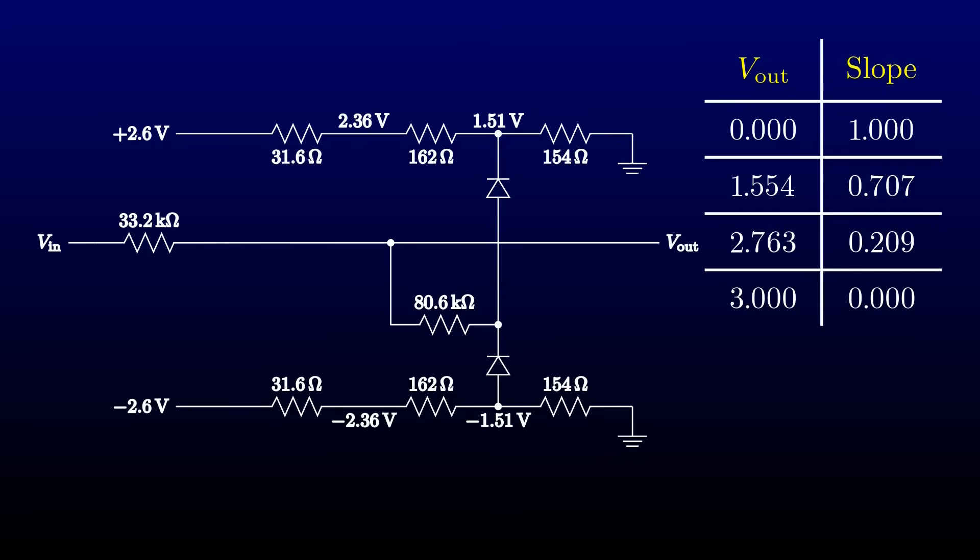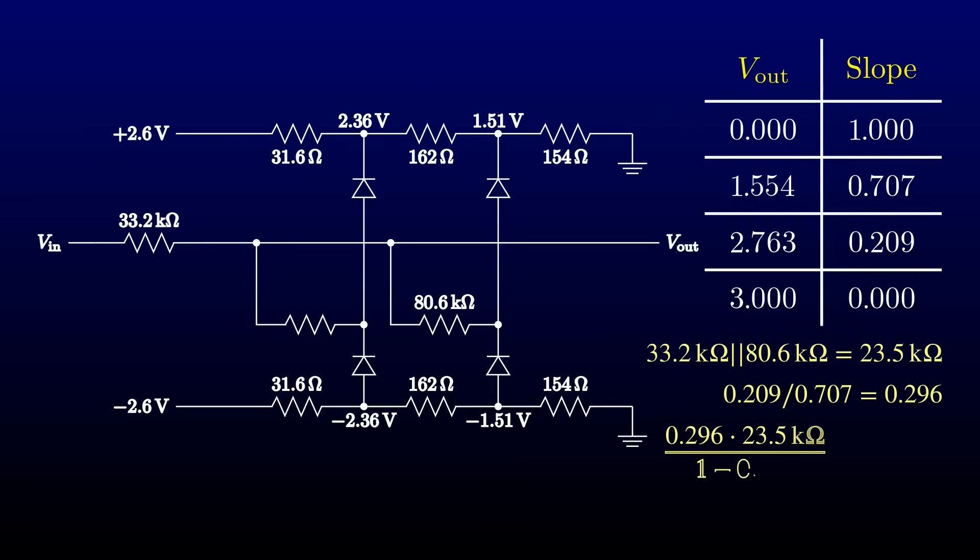Now we come to a case that we haven't seen before. When either of these two diodes starts conducting, the source impedance it sees isn't just the input resistor, because the diode to its right is already conducting. Instead, it sees the input resistor in parallel with the resistor from the other stage, or in this case 23.5 kilohms. The divider ratio is still the ratio of the current slope to the previous one. Here it's 0.296. Working through the divider formula, we get a value of 9.88k for the resistor. The nearest standard 1% value is a convenient 10k. Of course, we still need the last pair of diodes to clamp the output at 3 volts.